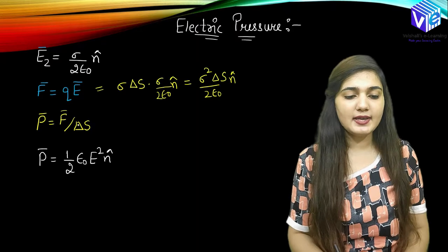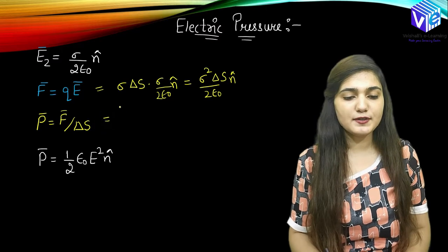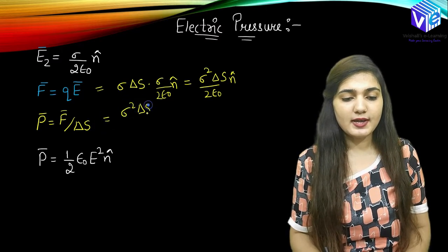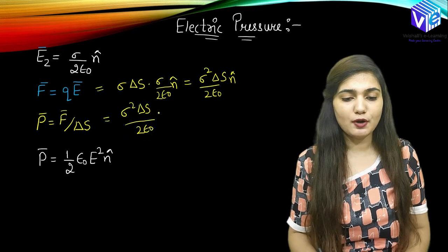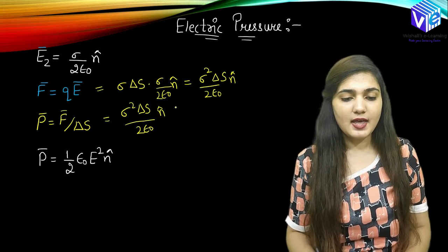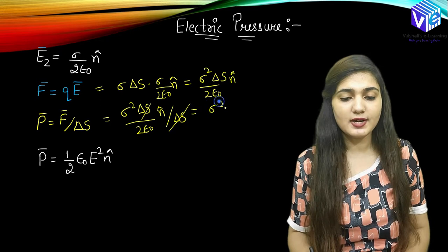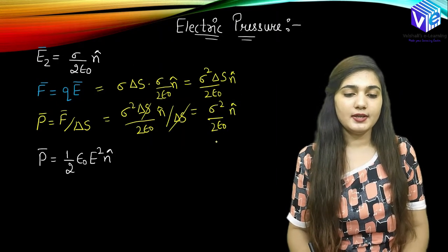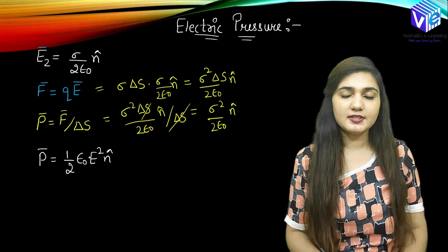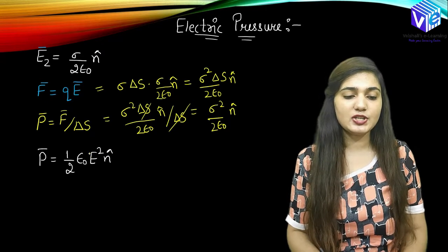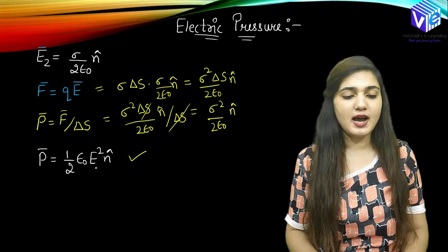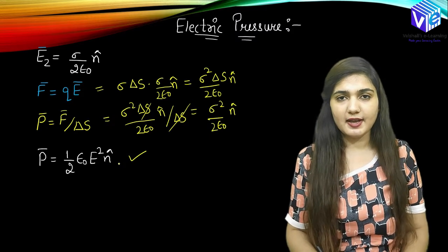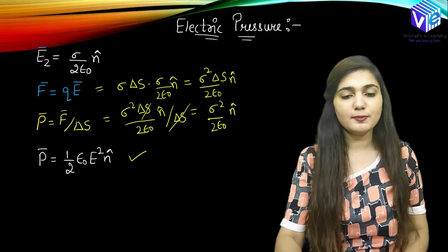Now, force when it is divided by the area — force divided by ΔS — is going to give me the pressure. The force was σ² ΔS/(2ε₀) n̂, and now I am going to divide it by ΔS. The ΔS cancels out and here I get σ²/(2ε₀) n̂. This is my pressure. So here pressure can also be represented in terms of electric field. In terms of electric field, the pressure would be ½ε₀E² n̂. This is how I can denote my electric pressure.